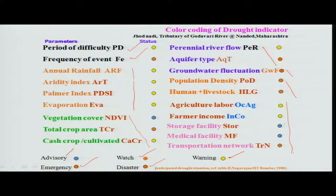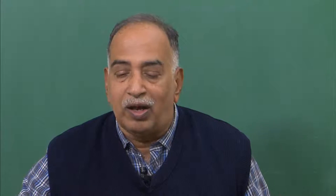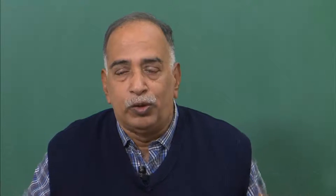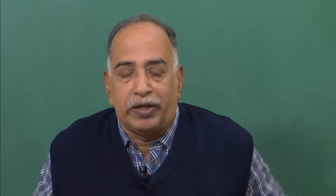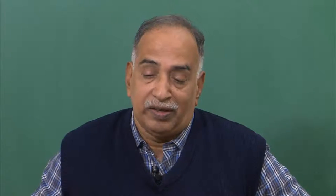The advisory, watch, and emergency classifications can be given as color coding by panchayats or local bodies, so that people will be able to carry out their own bit of preparedness.